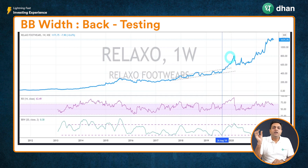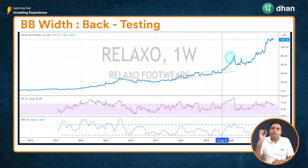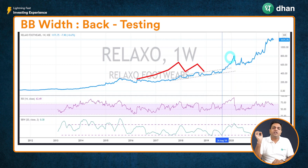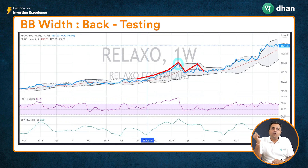It is important to understand how to read Bollinger Bands and draw insights around stock price volatility, since other indicators typically do not give a picture of volatility. Whenever the price is trying to cross the upper or lower band, you can expect a very good move in the same direction. When the price crossed the upper band in this example, it gave a phenomenal up move, and similarly, whenever the price crosses the lower band, it will give a phenomenal down move.